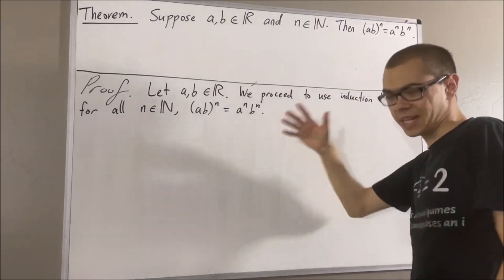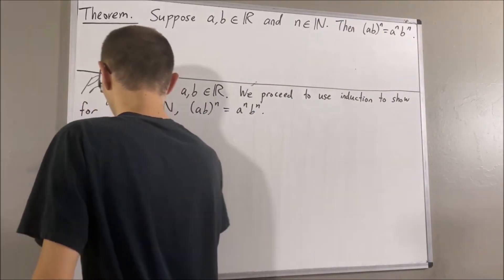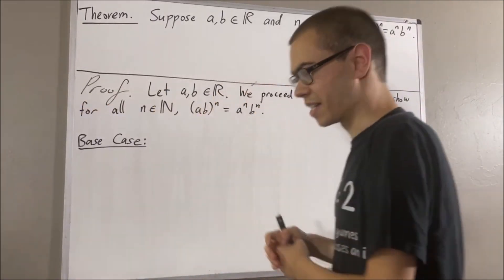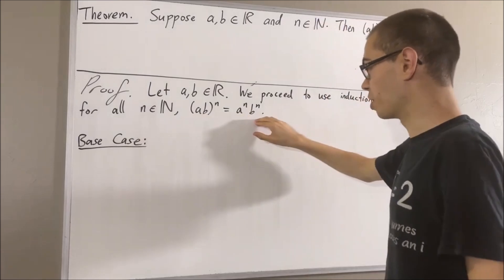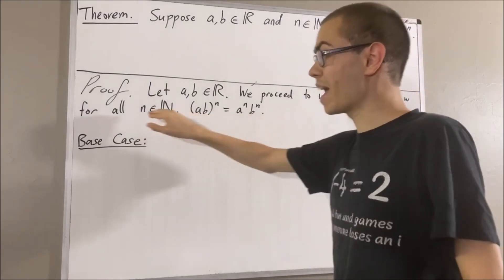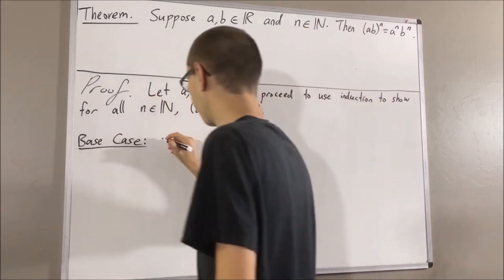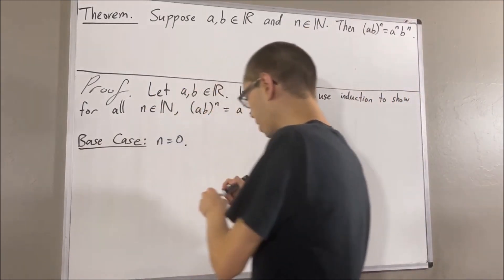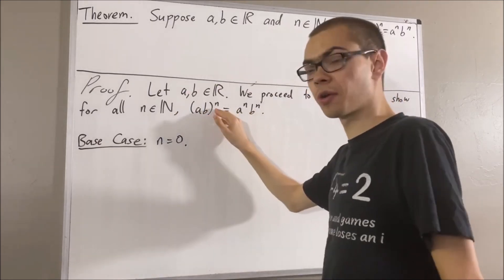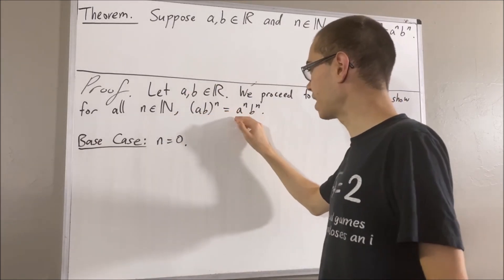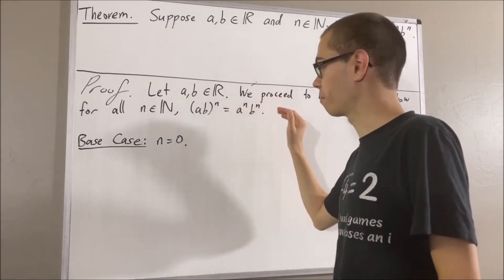So let's start with the base case. In the base case we're trying to prove that this is true in the case where n is equal to zero. So we want to show that AB to the power of zero is equal to A to the power of zero times B to the power of zero.